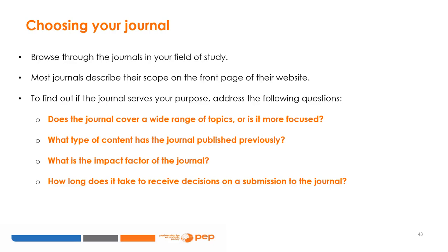To sum up, to choose a journal to submit your paper to, identify the journals related to your field of study and their individual focuses, and then select a journal with a focus similar to the content of your manuscript. Look at papers recently published in your journal of interest and ask yourself if your paper is of equal or higher caliber. If not, submit your work to a different journal.